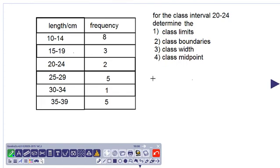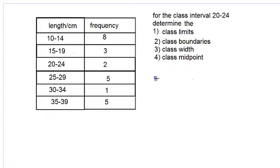Let us determine these class features for the class interval 20 to 24. We have a frequency distribution in front of us, so let's look at number one, class limits. We have an upper class limit, which is the higher number 24, and the lower class limit, which is the lower number in the interval, which is 20.